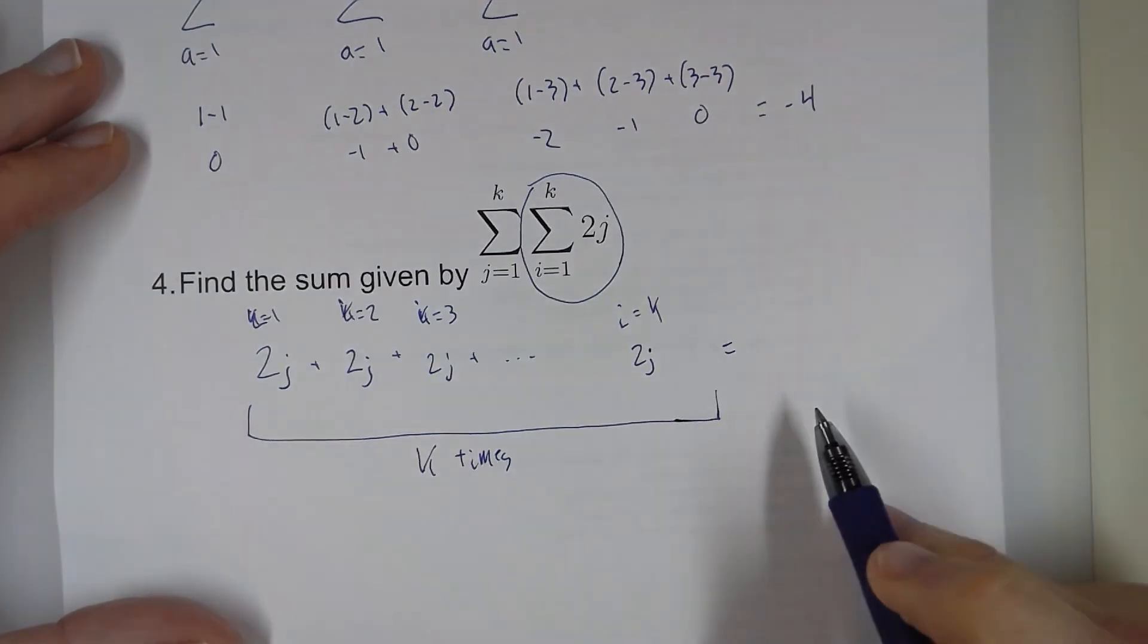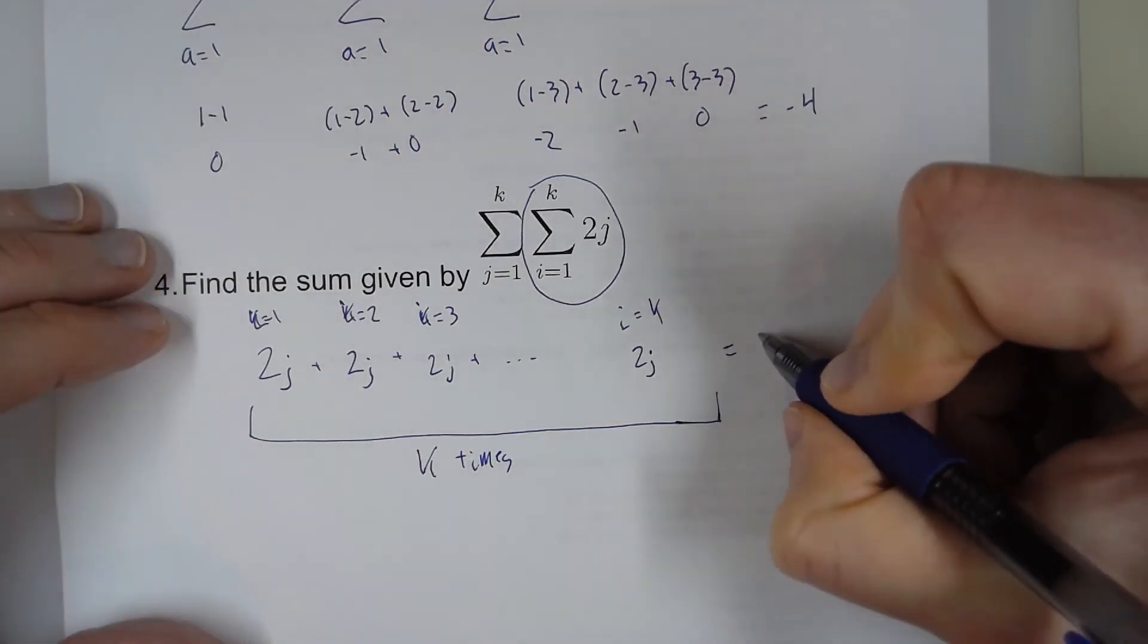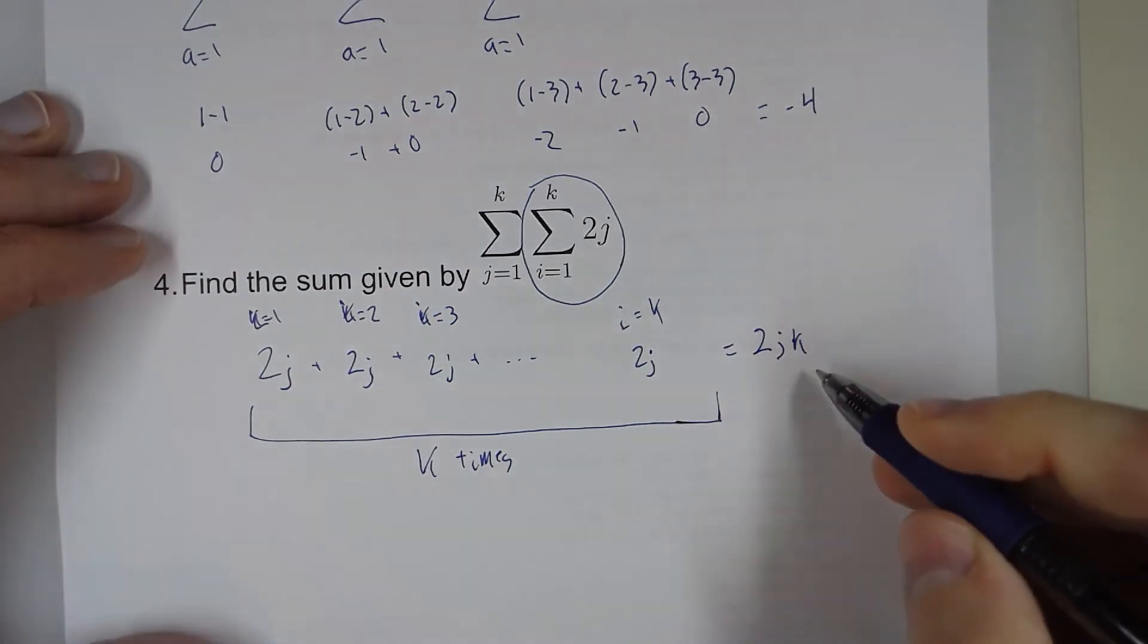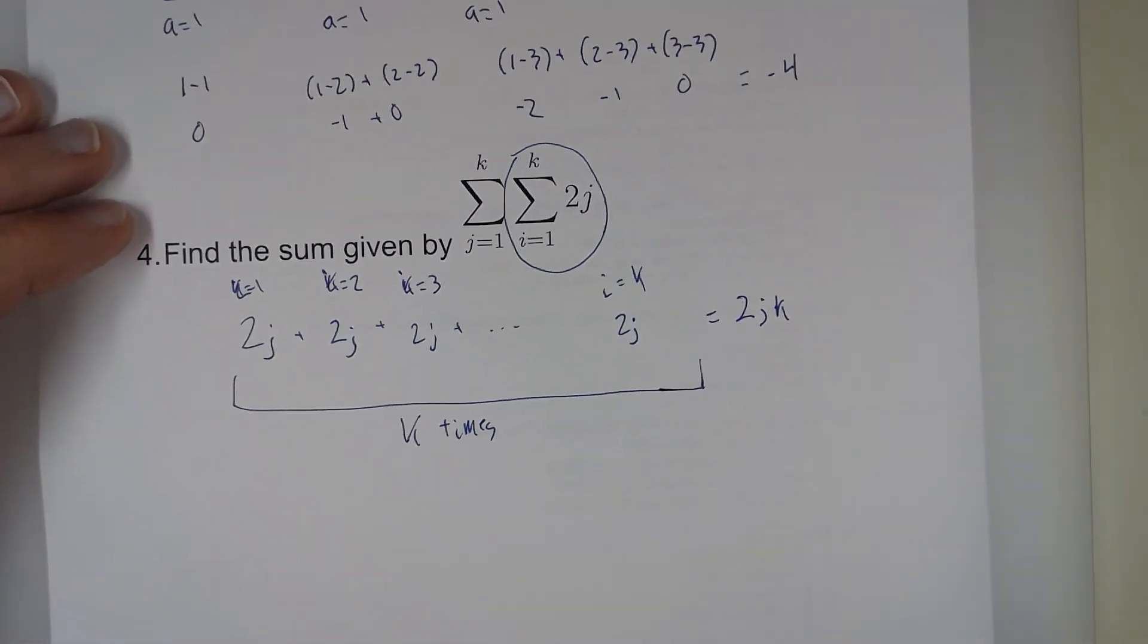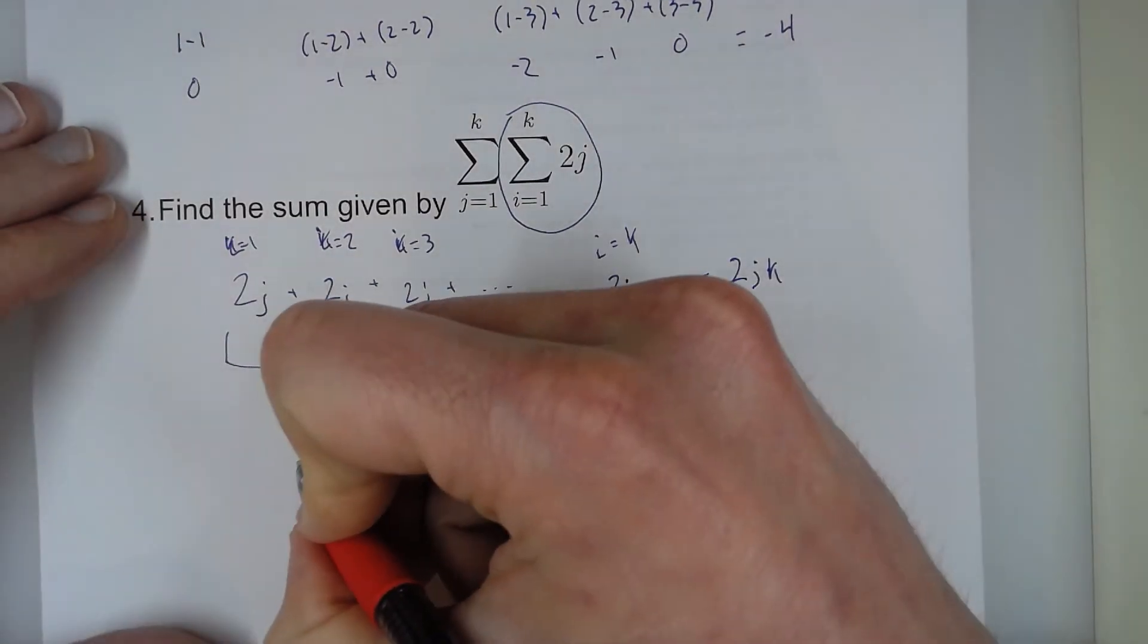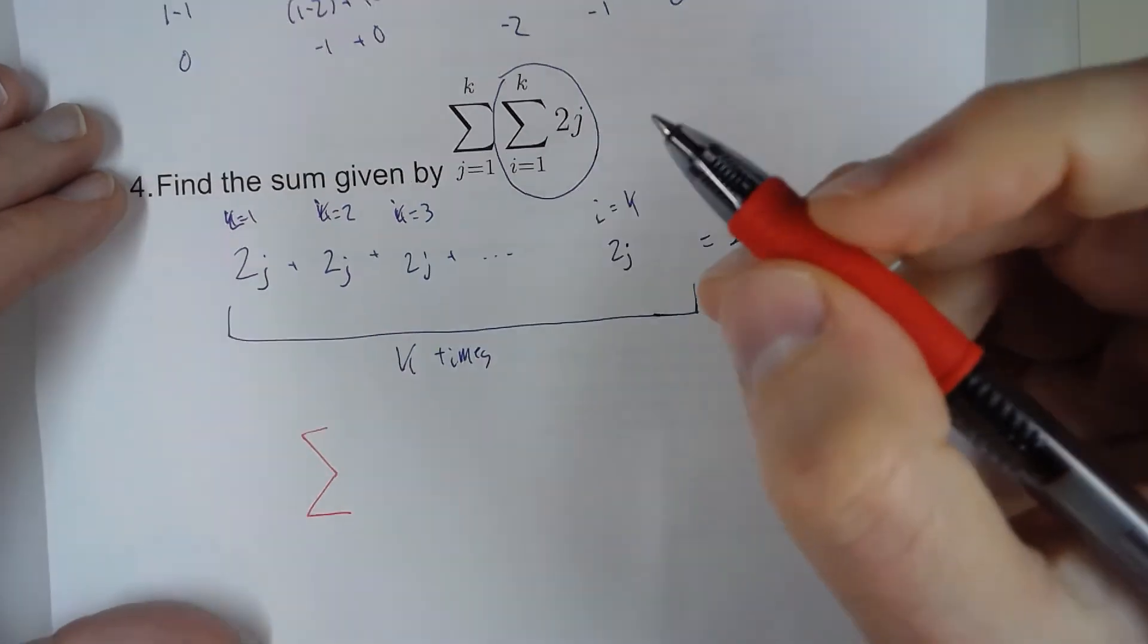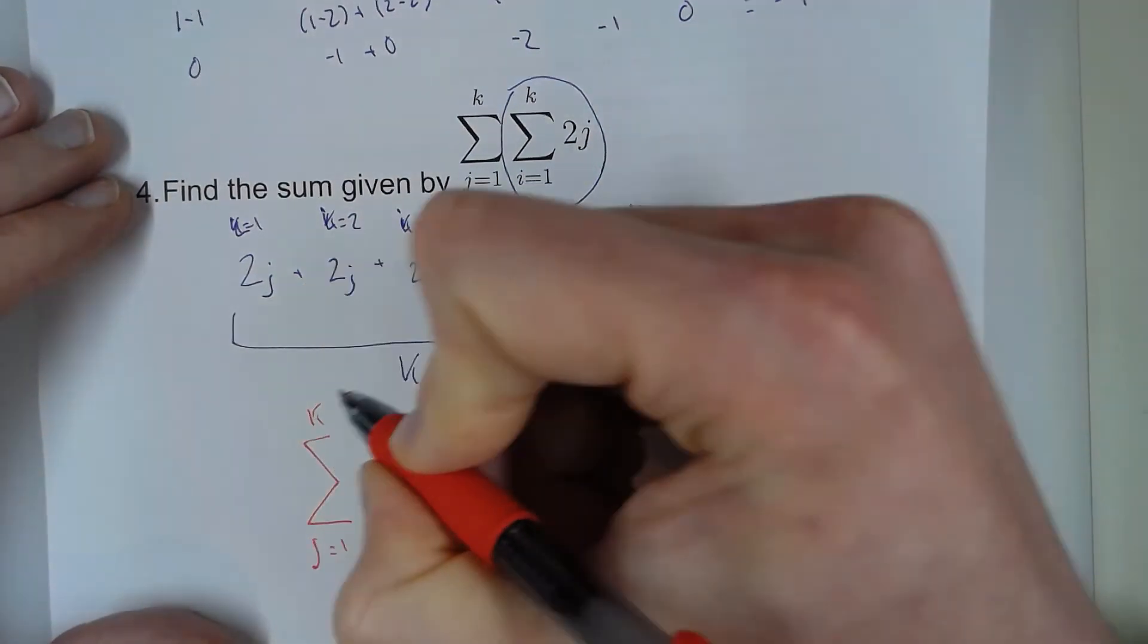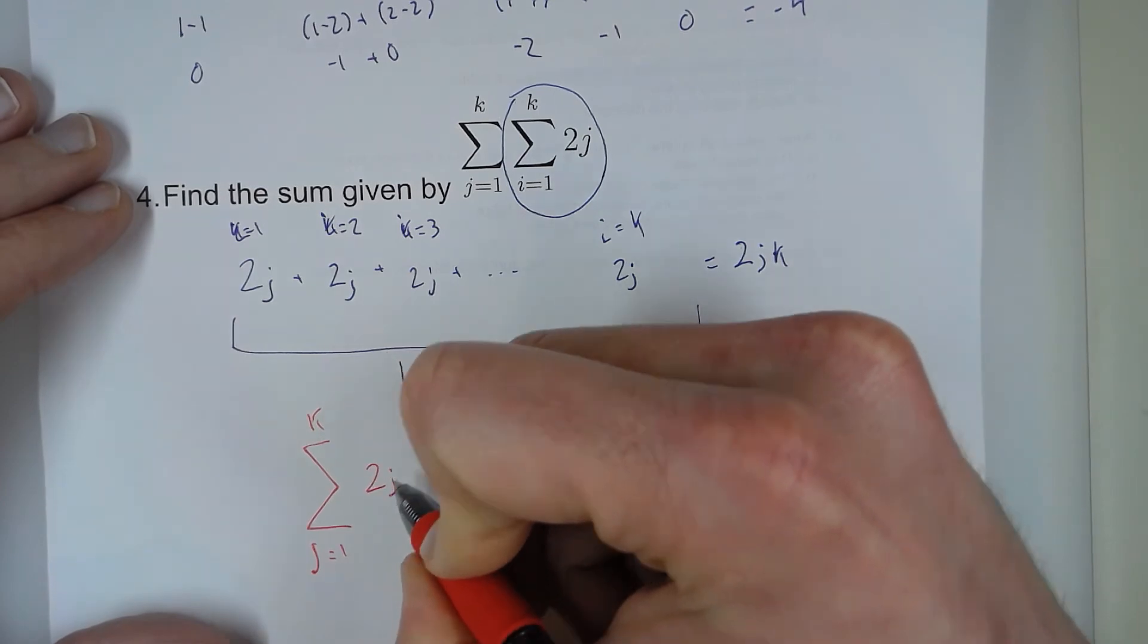So if I add these up, I can just say, well, if this happens k times, this is 2jk is what this total is. So now I have j equals 1 to k, 2jk.